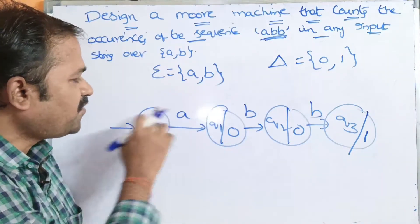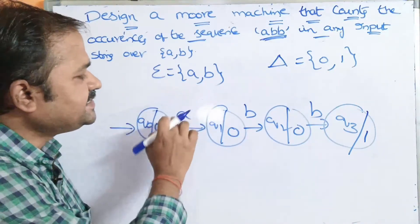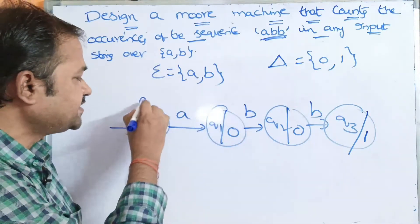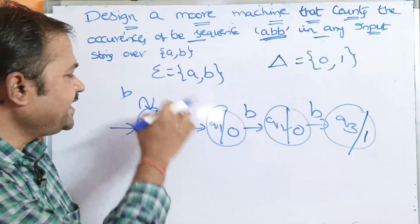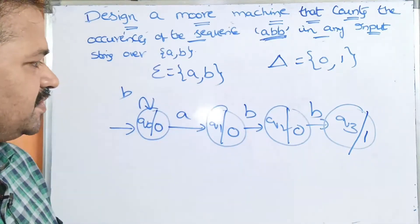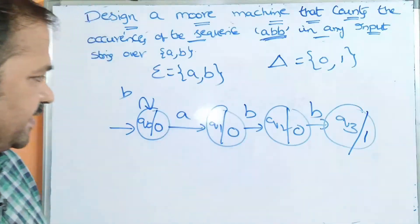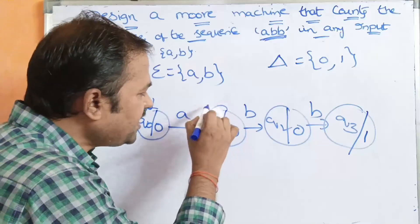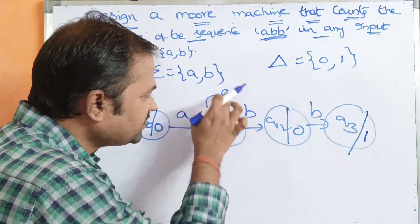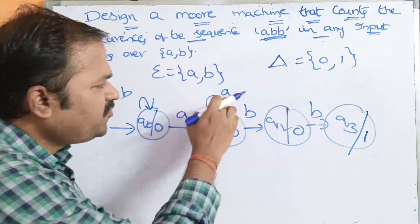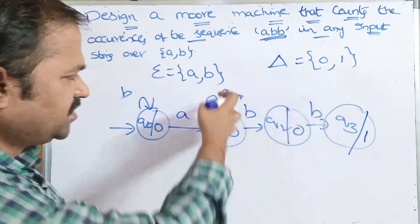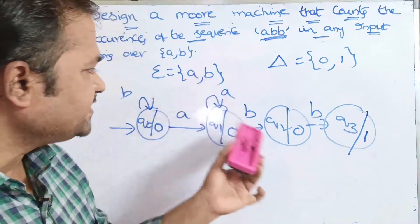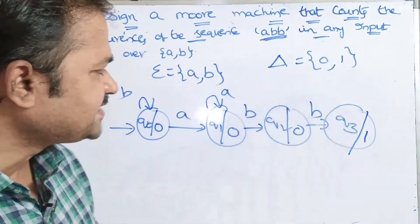On Q0, both A and B are applied. Before ABB we can have any number of B's, so there is no problem. On Q1, A is applied as a self-transition, because after A we may encounter another ABB sequence — so the self-loop is helpful. On Q1, both A and B transitions are defined. On Q2, B is applied going to Q3.